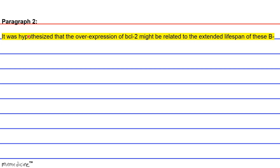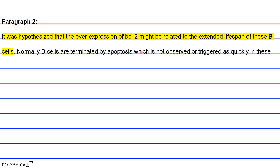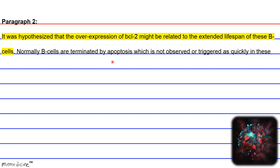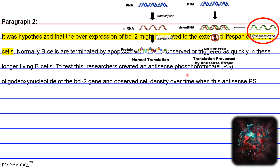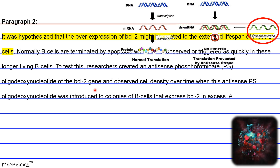It was hypothesized that the overexpression of BCL-2 might be related to the extended lifespan of these B-cells. Normally, B-cells are terminated by apoptosis, which is not observed or triggered as quickly in these longer-living B-cells. To test this, researchers created an antisense phosphorothioate (PS) oligodeoxynucleotide of the BCL-2 gene and observed cell density over time when it was introduced to new colonies of B-cells that expressed BCL-2 in excess.